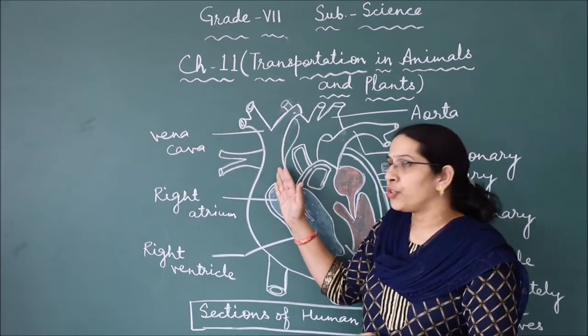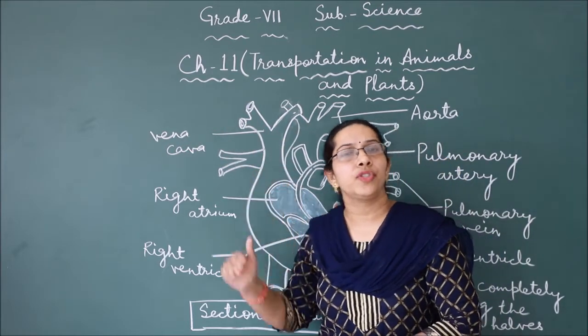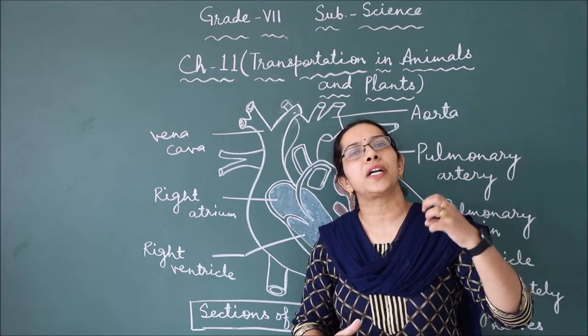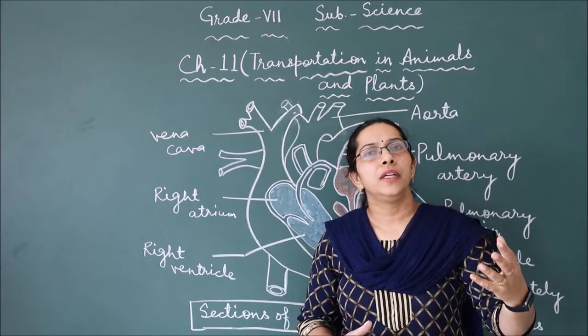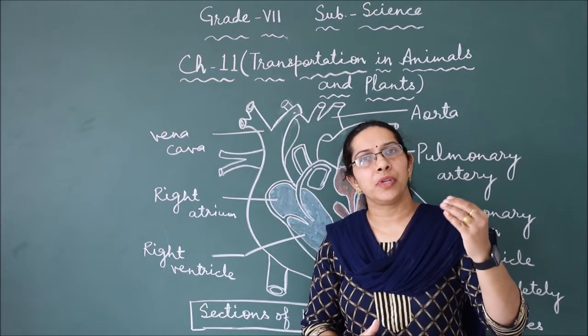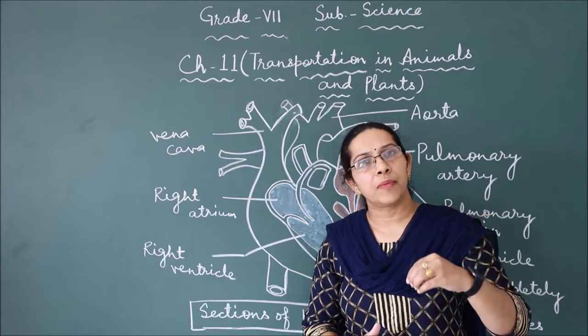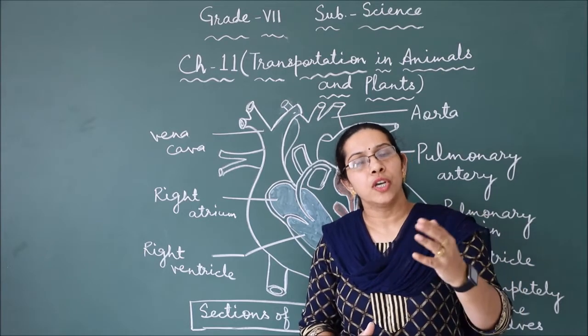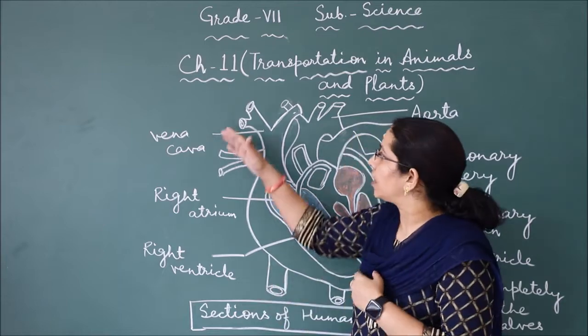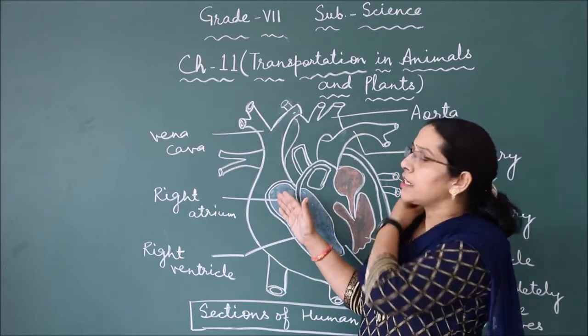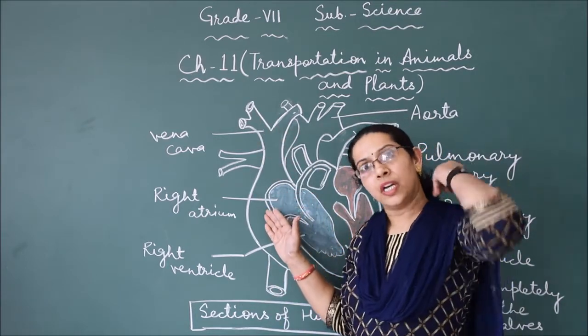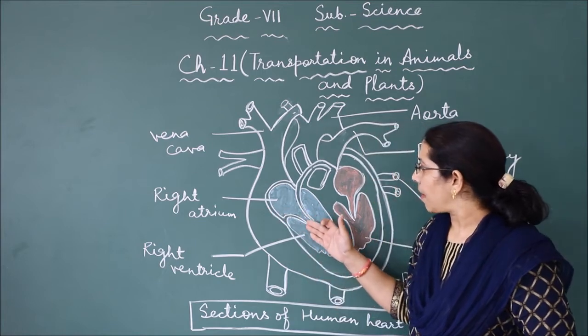Vena cava brings deoxygenated blood. From body parts, basically from cells, during respiration carbon dioxide is mixed with the blood and this deoxygenated or impure blood comes to the heart.